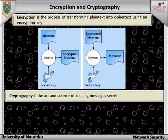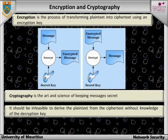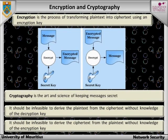There are two main requirements for cryptography. It should be computationally infeasible to derive the plain text from the ciphertext without knowledge of the encryption key. Both these conditions should be satisfied even when the encryption and decryption algorithms themselves are known.